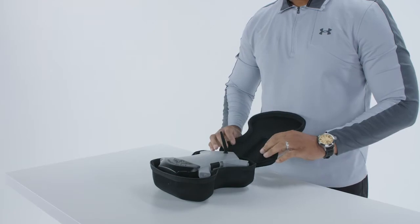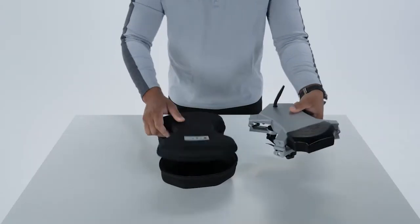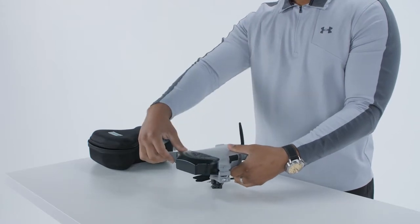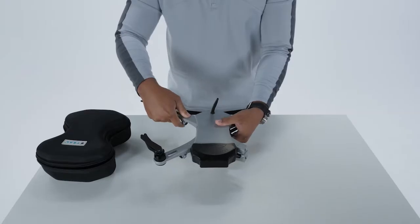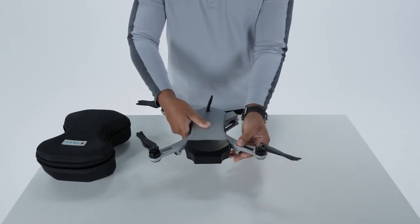Inside the case you will find the Golden Eagle drone with its motor arms folded. Let's unfold them. One by one, firmly grab each motor arm and swing it into the flying position until they snap into place. You will hear and feel the motor arms securely snap into place.